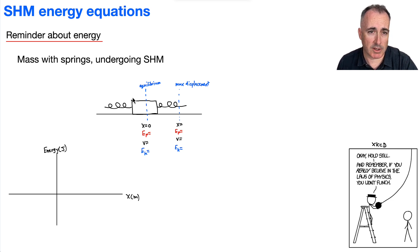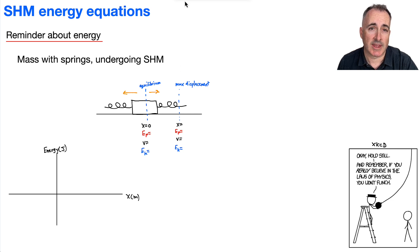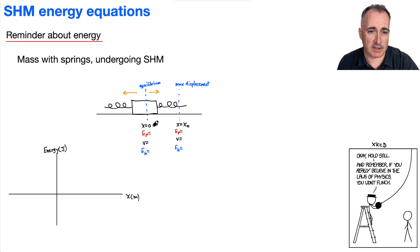If you look at this one here, this is the equilibrium point, and this whole thing is going to be oscillating left and right, going back and forth. As it goes back and forth, it goes between the equilibrium point where X equals zero, and the maximum displacement which we call X equals X-zero. Now remember about potential energy: if X is zero, potential energy is zero. If X is at a maximum, then potential energy will be at a maximum value.